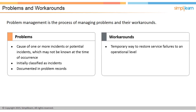A workaround is a temporary way to restore service failures to an operational level — for example, rebooting a server. The reason behind the server's failure may not be known; however, on rebooting, the service can be restored. Workarounds are used for reducing or eliminating the impact of an incident or problem for which a full resolution is not yet available.